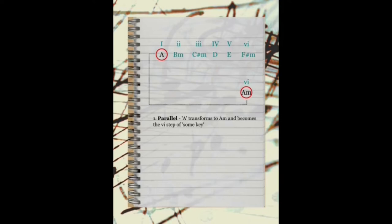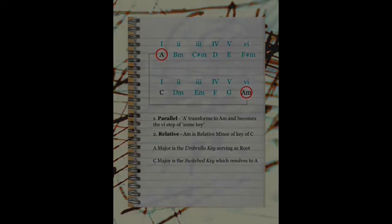If a minor chord is at the sixth step of some major key, that key turns out to be C major. So we lay out the chords of that key as well. A major is now the umbrella key serving as the root. C major is the switched key which resolves back to A major. We have now successfully achieved the very same conclusion that we did with our earlier pentatonic thinking.